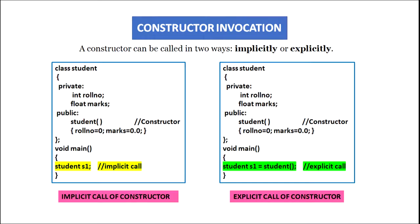Constructor invocation. A constructor can be called in two ways: implicitly or explicitly. Taking the example of class student with private data members roll number and marks, and a constructor in the public section with the same name as the class assigning initial values — in void main, when we give the statement student S1, the object S1 is created and the constructor is called automatically. Since we are not calling it explicitly, this is an implicit call of the constructor.